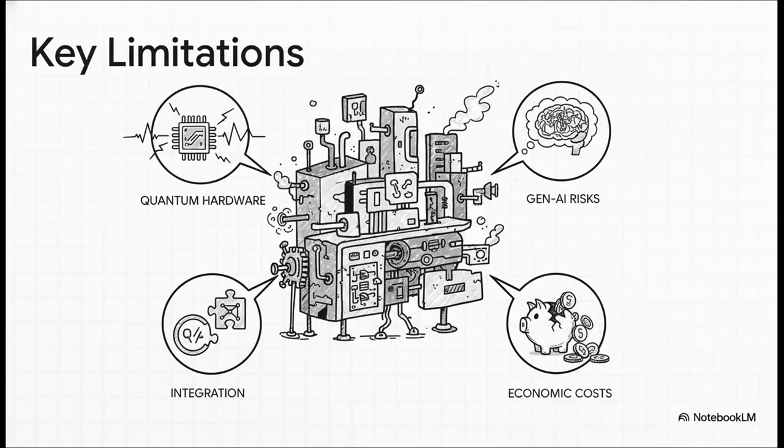First, the quantum hardware. Look, the qubits we have today are still pretty limited. They're noisy, they're unstable, and they don't stay quantum for very long. So their advantage is really restricted to specific problems. Then you have the Gen AI risks, which I'm sure you've heard about. These models can just make stuff up, hallucinate, they can leak sensitive data, and they can be biased. And then you try to combine them? These hybrid systems are incredibly complex to build and debug, not to mention they can be crazy expensive. You need a rock-solid business case to justify all that.